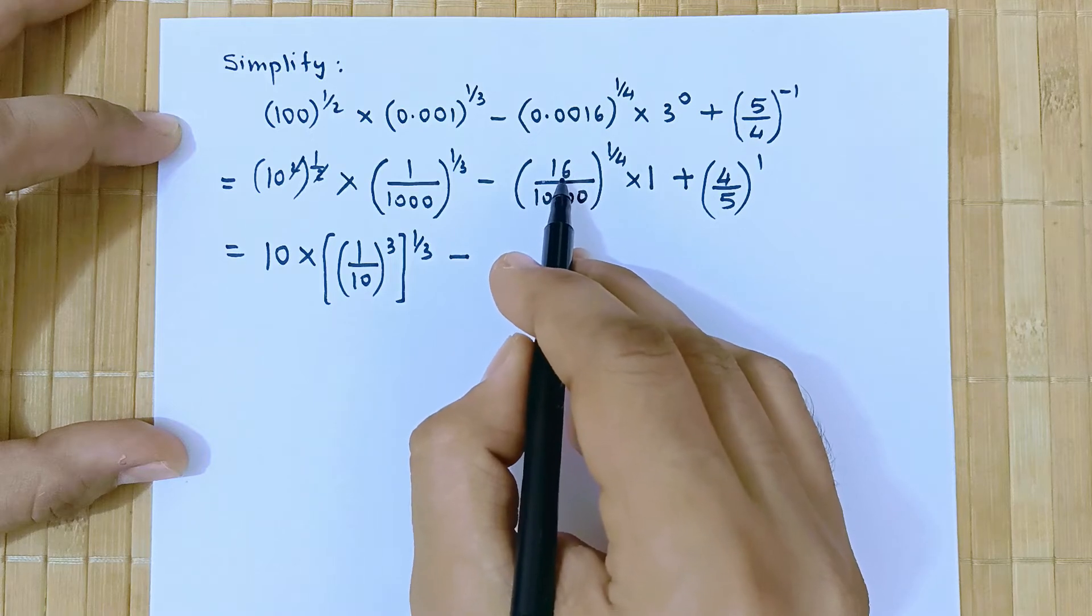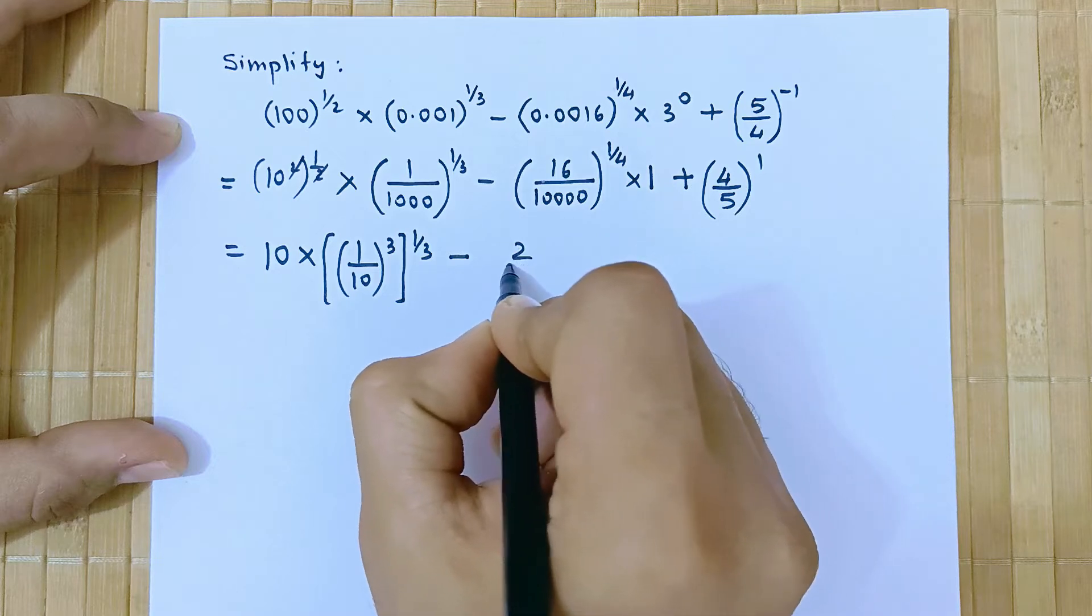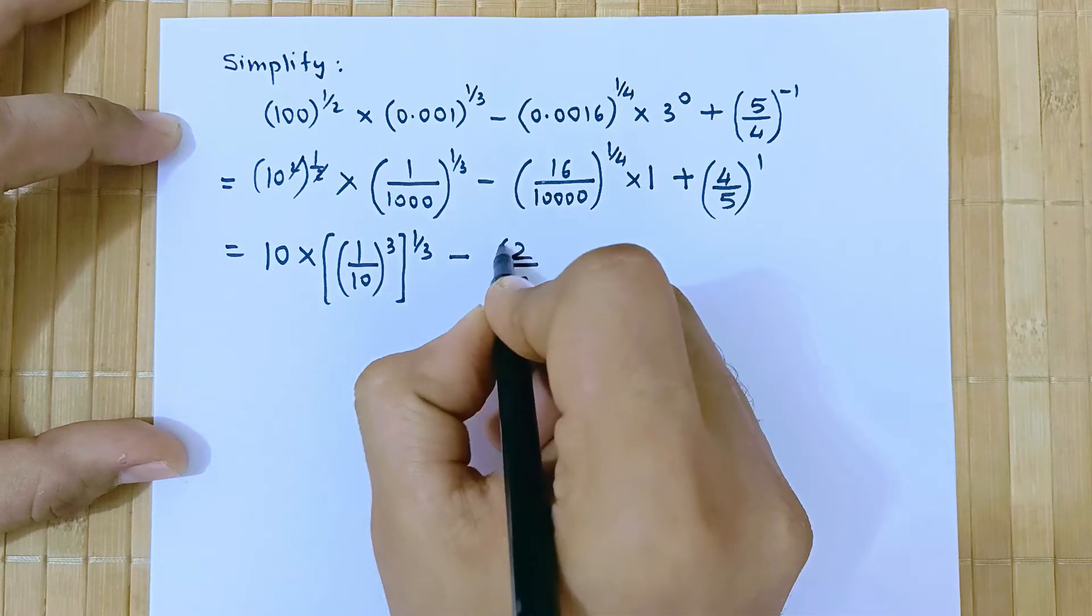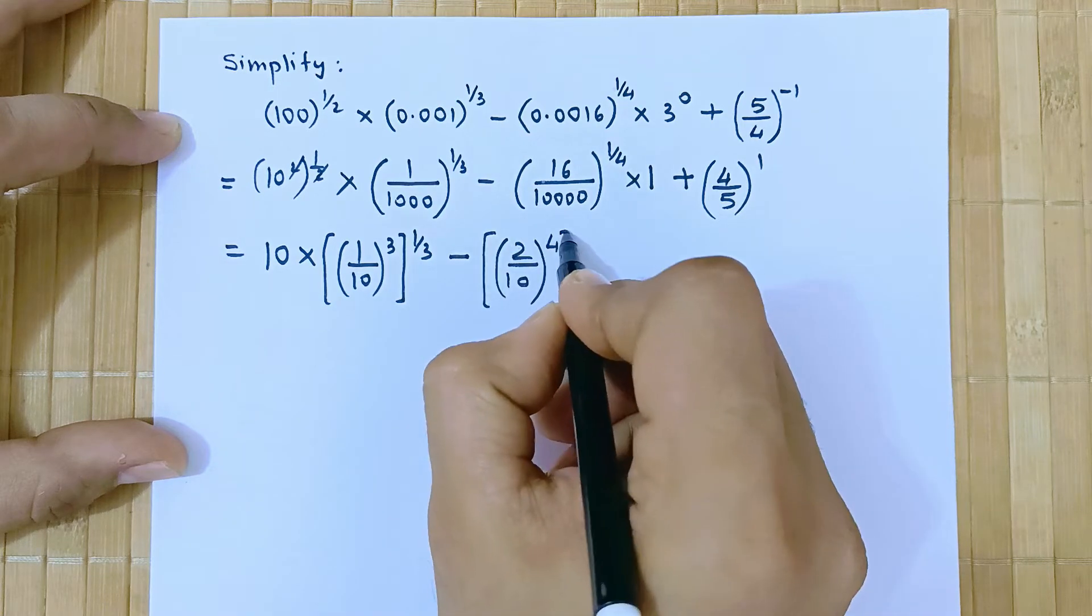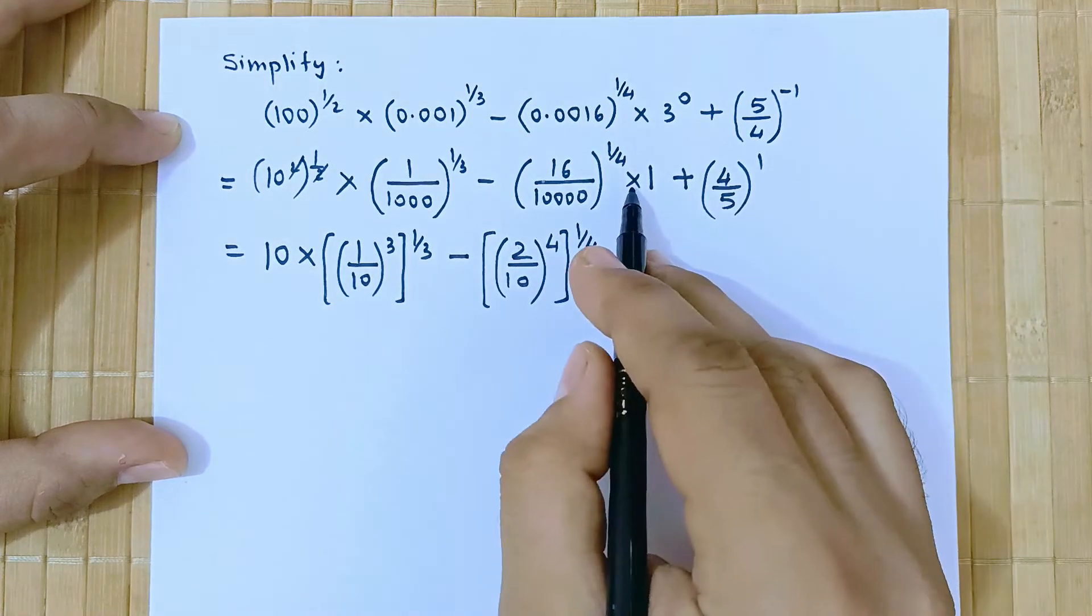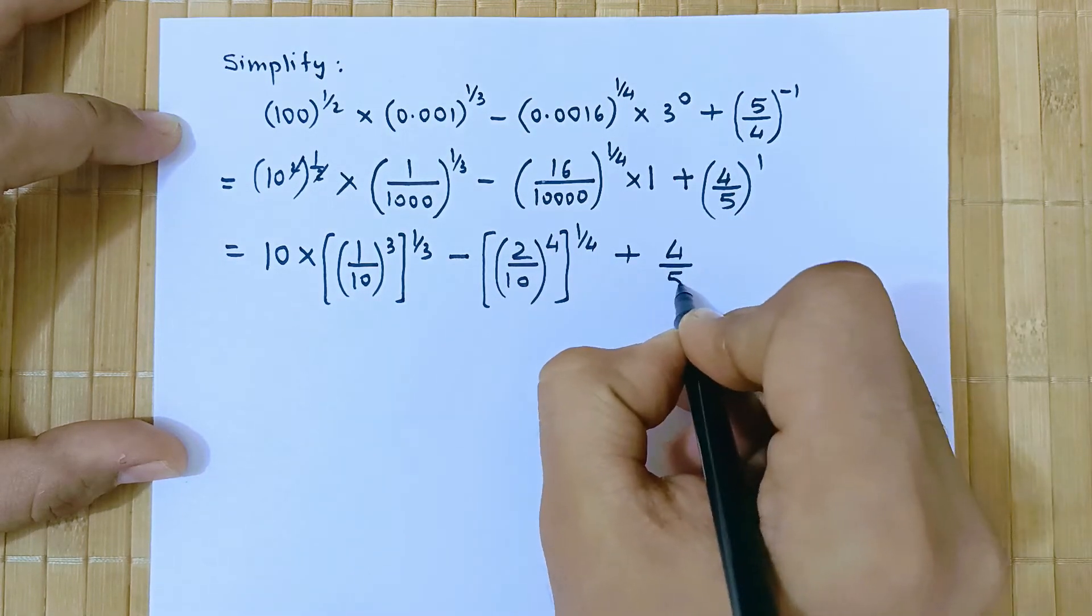Now this is 2 raised to 4 and this is 10 raised to 4. So we can write as 2 by 10 the whole thing raised to 4 and further raised to 1 by 4 times 1 plus 4 by 5.